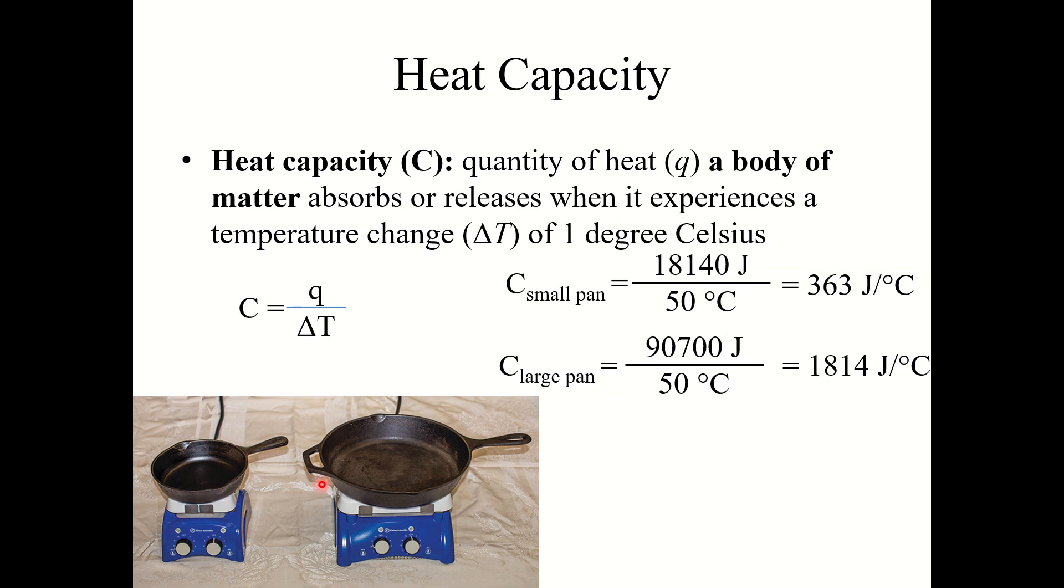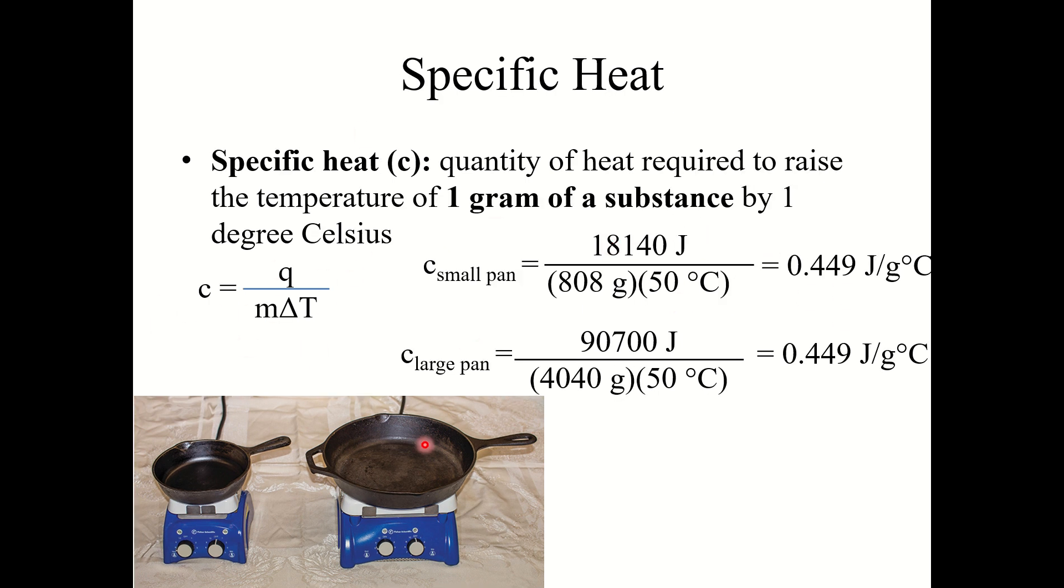Here, what it's made of makes a difference, but also how much of it you have makes a difference, because it's just heat over delta t. Whereas with specific heat, it doesn't matter how big the frying pan is, what matters is what these frying pans are made of. They have the same specific heat values.